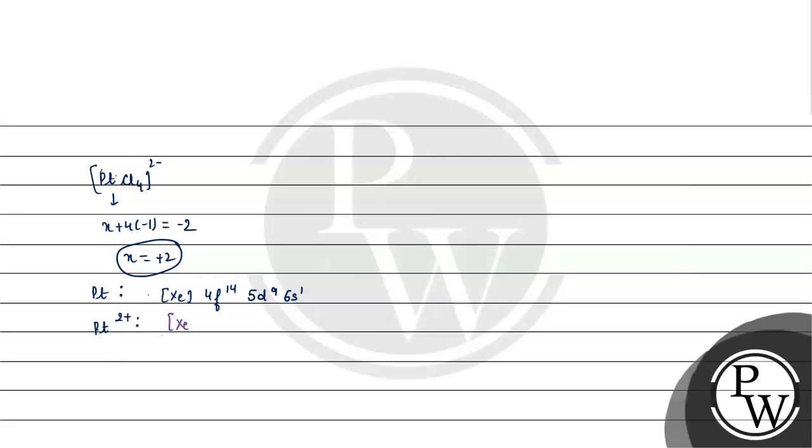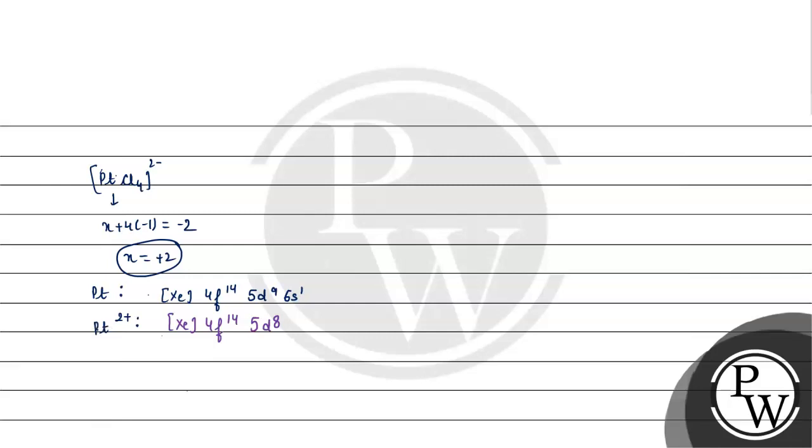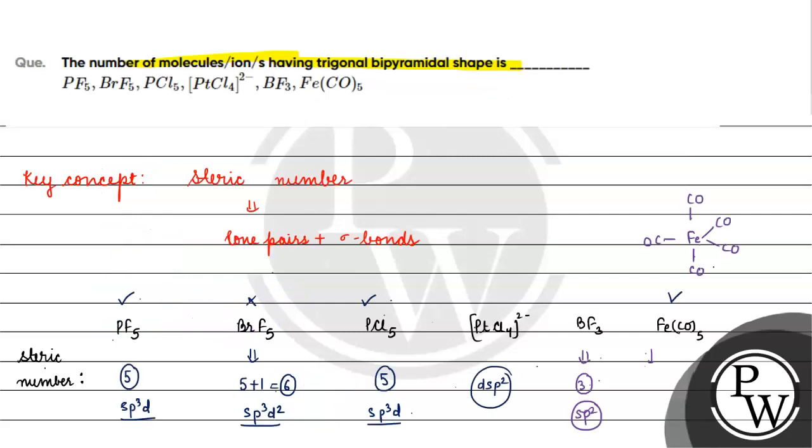2 electrons removed, xenon 4F14 5D8. Metal we have, what will happen? It will be pairing of electrons 1 2 3 4 5 6 7 8, these unpaired electrons what will happen? Pair. And we have hybridization that will happen DSP2. The shape we have that will be square.